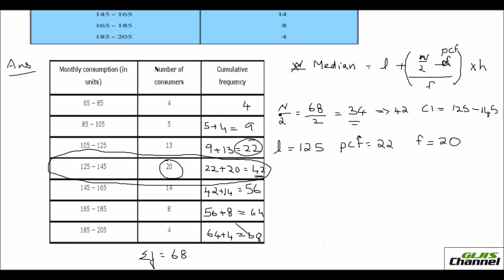What else? And your H. Your H is the class size, which is also 20. Now let us apply this in the formula and get the answer. So your median is equal to the lower limit, which is 125, plus, open the bracket, n by 2 is 34 minus previous cumulative frequency is 22, divided by the cumulative frequency of that, so that's 20 times 20. So this would get cancelled. So you get 125 plus, this is 34 minus 22 is 12. So your median is equal to 137.